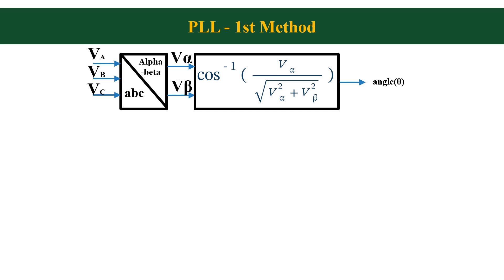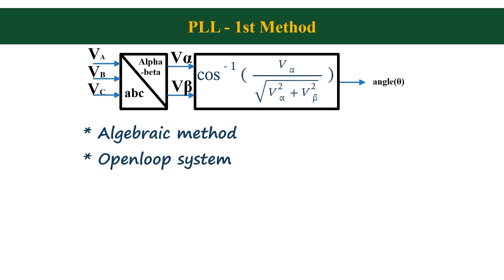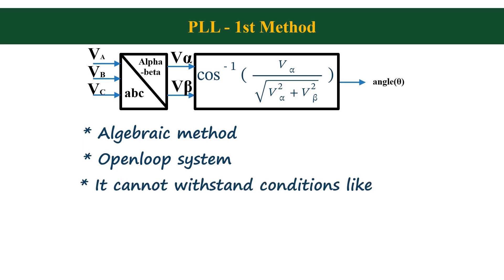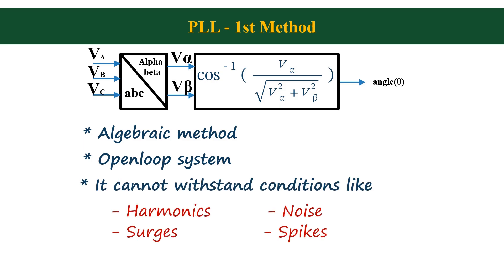But there are a few problems with this method, and hence this method is not used in many situations. The major problem is that this is merely an algebraic method with simple mathematics involved, and it is just an open loop system. So the system can go to an unstable situation under critical grid conditions. This PLL cannot withstand conditions like harmonics, surges, noise, and spikes. Due to this, the output of PLL will give wrong angle information.